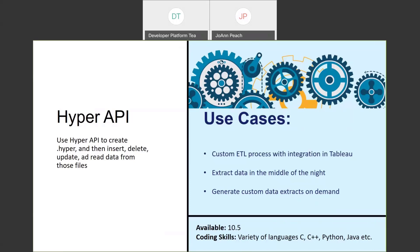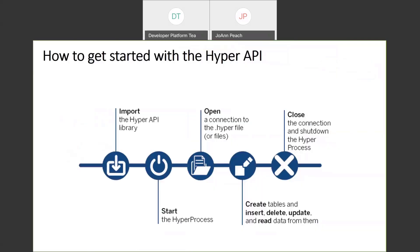For example, if you want to create an extract only when the data is actually ready, you can use the Hyper API to automatically generate a Hyper file once the data is ready and available. If you want to start tomorrow with the Hyper API, you need to import the Hyper API library, start the Hyper API process, open the connection with the Hyper file, and then you can create tables, insert, delete, update, and read data from them. Don't forget to close the connections when done.